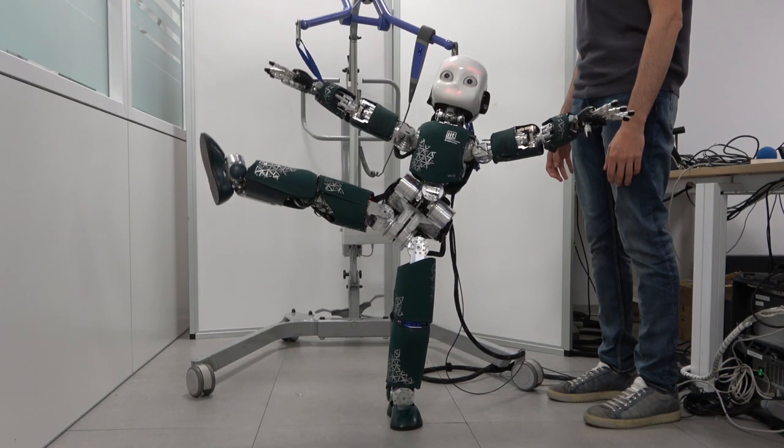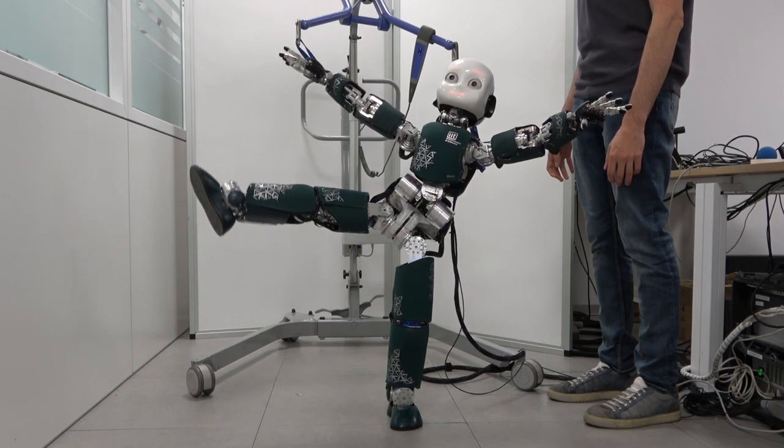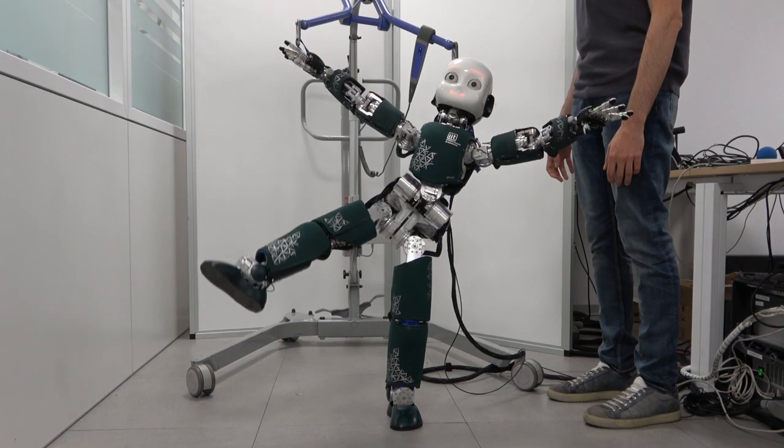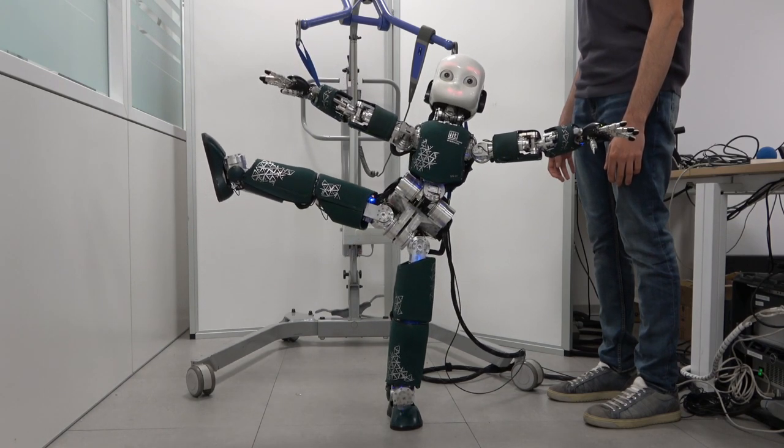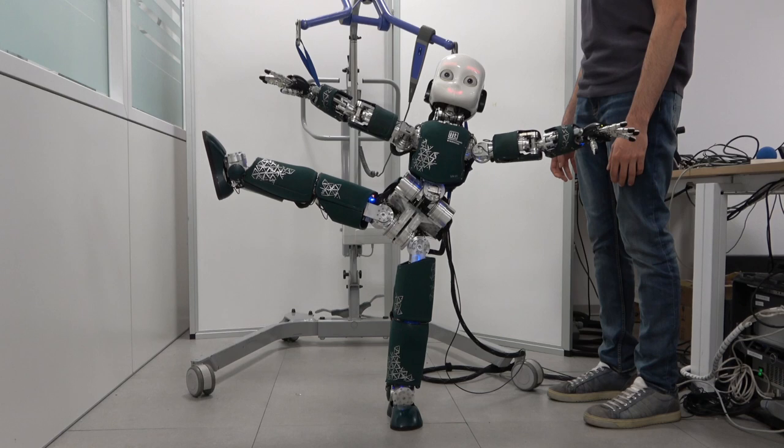The controller must accomplish two tasks: the stabilization of the desired robot momentum in order to keep balancing, and the achievement of reference trajectories for the robot joints.